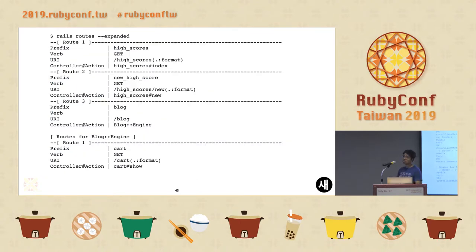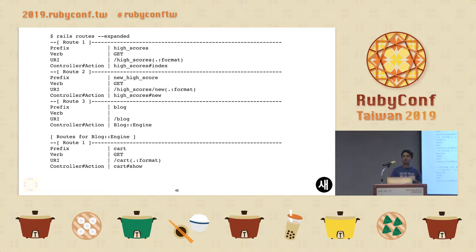Rails routes expanded mode has been added. If you've used rails routes before, it puts a single-line output which is very hard to read. Now you can use rails routes --expanded, which gives an expanded view and is easier to read.